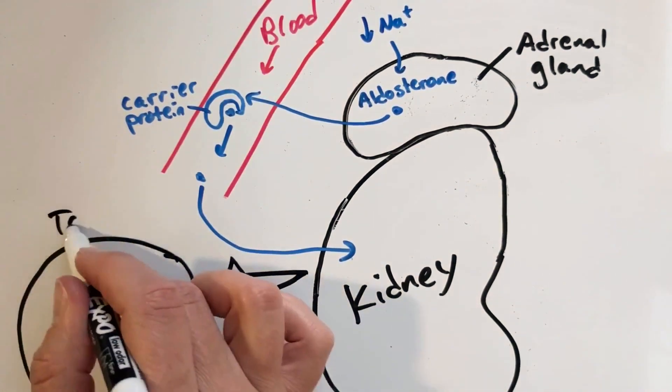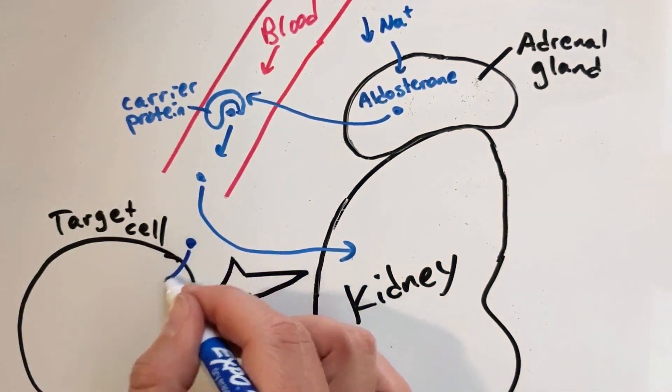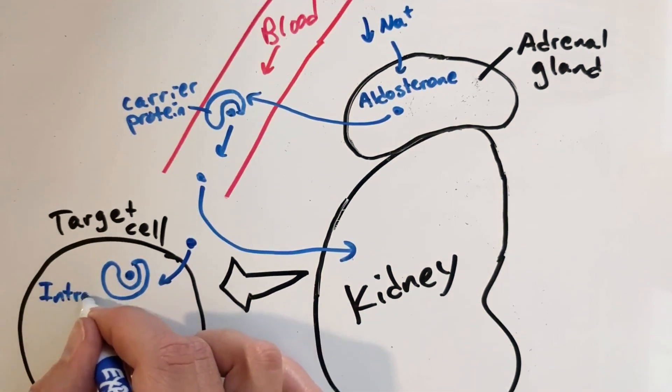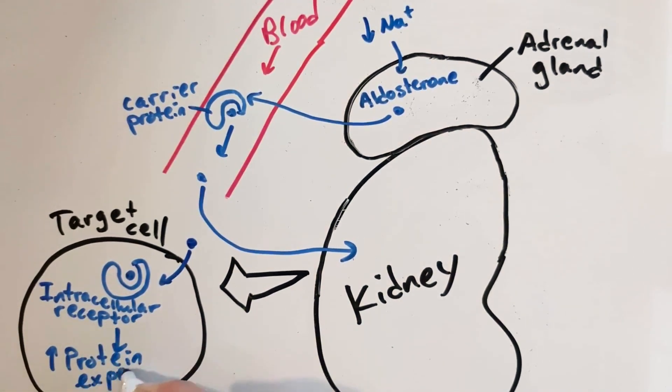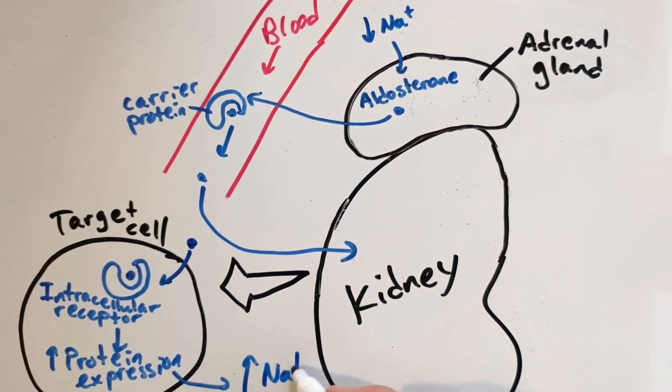Aldosterone enters the target cells and binds to an intracellular receptor. Together they bind DNA and increase expression of proteins that will help the kidney put more sodium back into the blood.